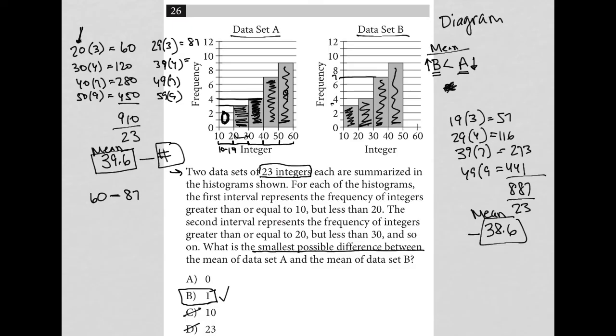So if I were to do the range for data set B, I'd get a number smaller than 38.6. So there isn't going to be any overlap. This is the largest that data set B can get to. This is the smallest that data set A can get to.